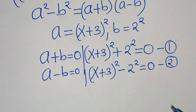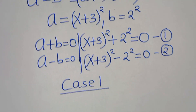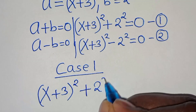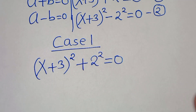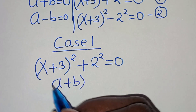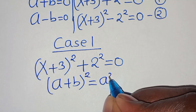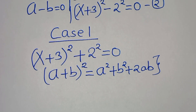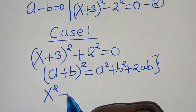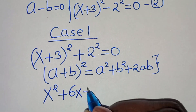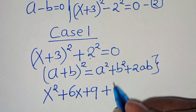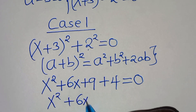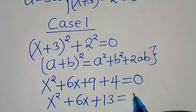Let's start with Case 1. We have x plus 3 raised to the power of 2, plus 2 to the power of 2, equals 0. Expanding x plus 3 squared using the identity (a+b)² = a² + 2ab + b², we get x squared plus 6x plus 9, plus 4, equals 0. So this simplifies to x squared plus 6x plus 13 equals 0.